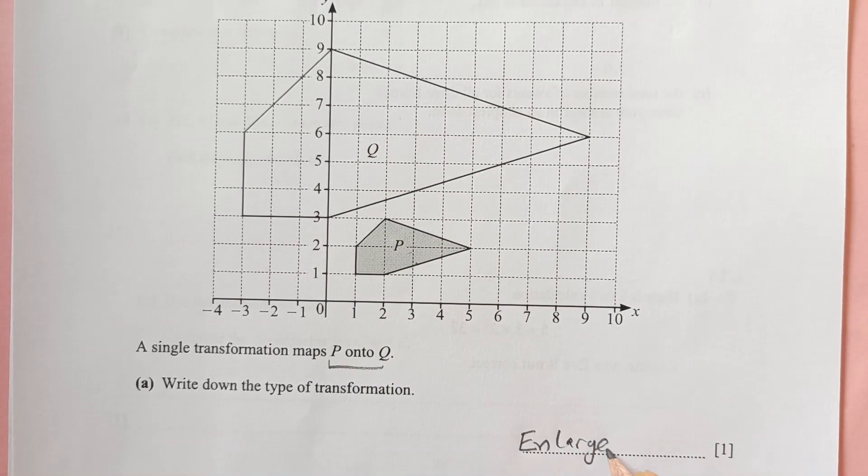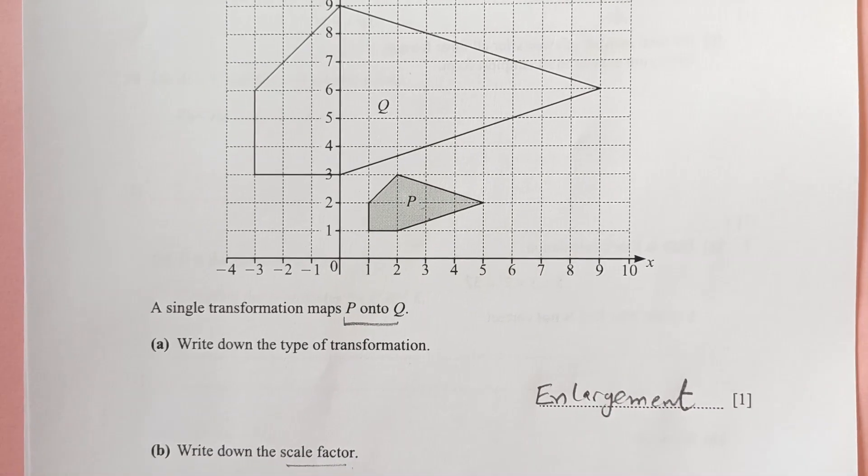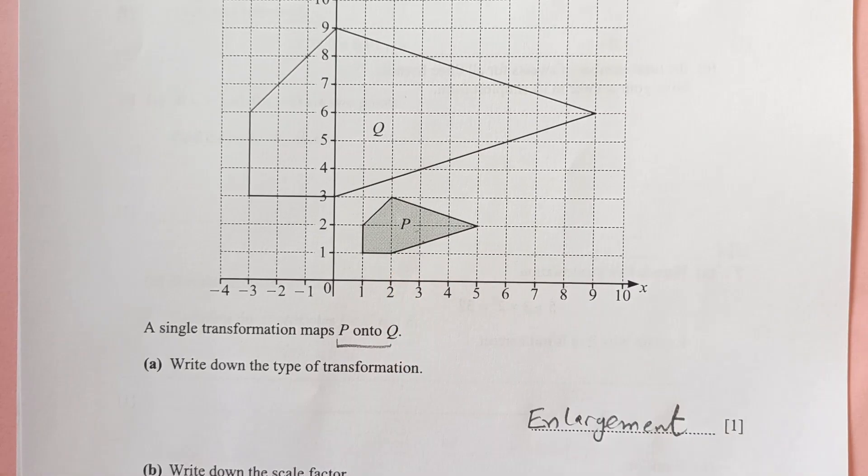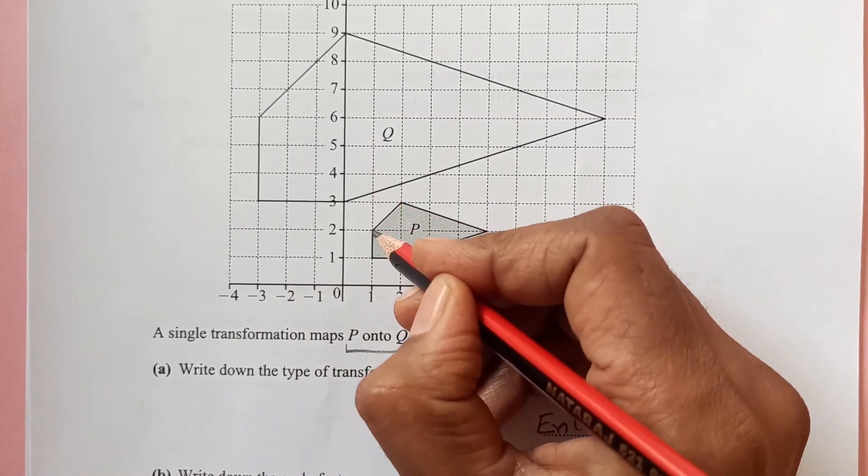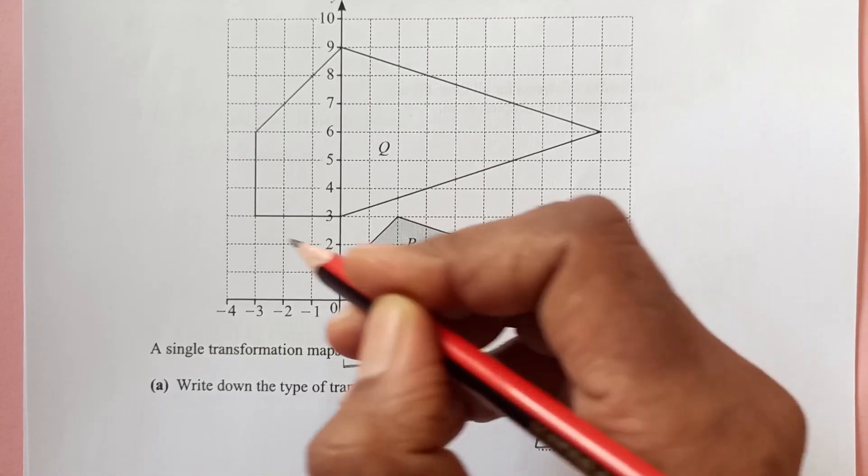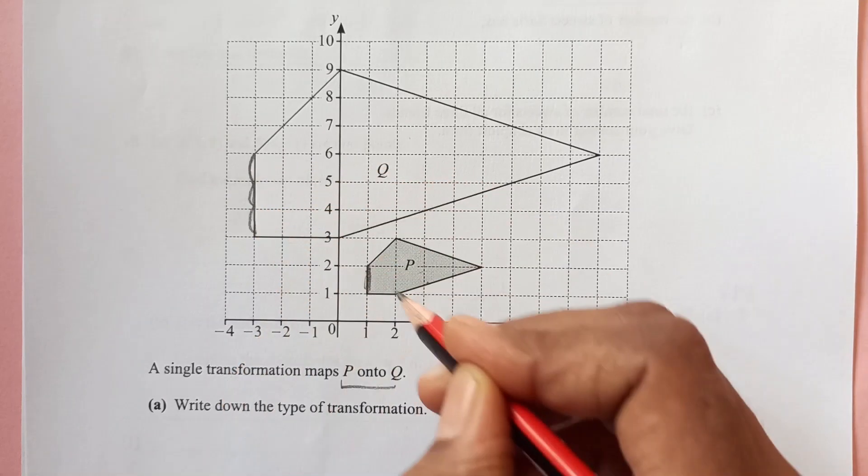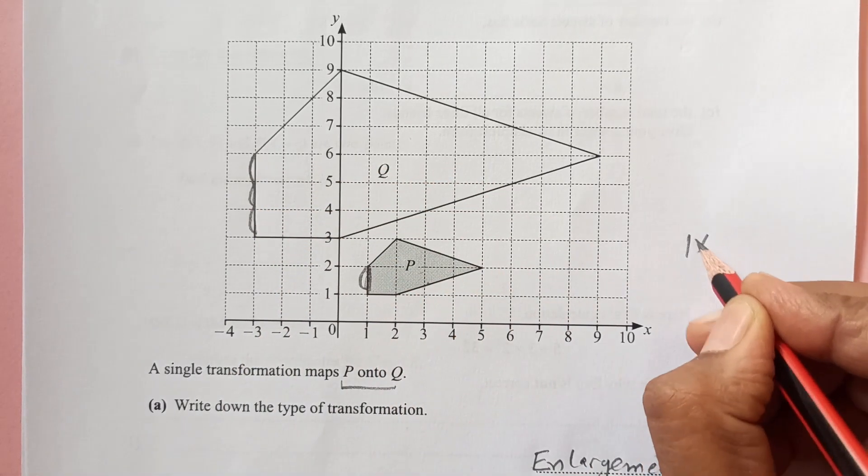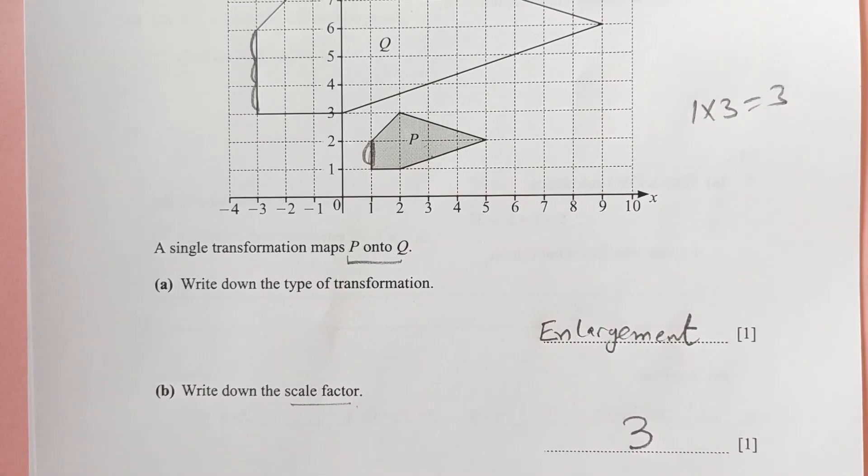Write down the scale factor. Scale factor tells you how many squares bigger. You see, you can choose any one side. This side is one square, here we have one, two, and three squares. So this is only one, so one times three, we have three as a scale factor.